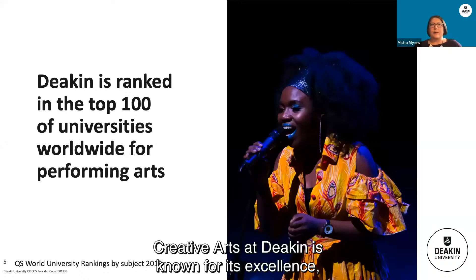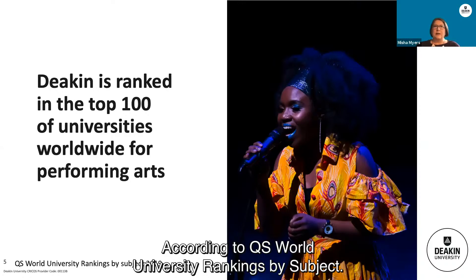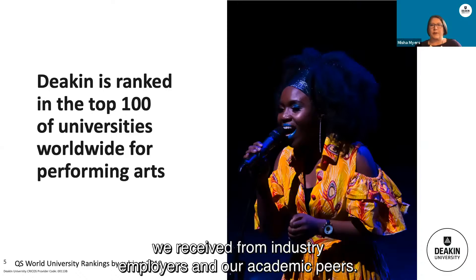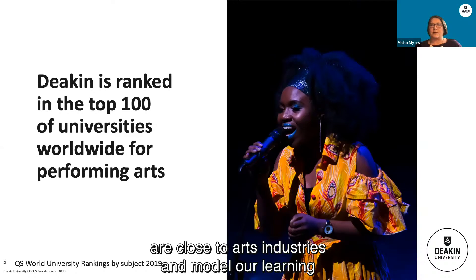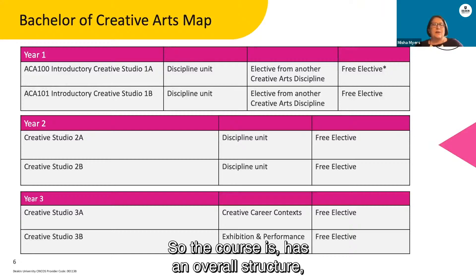Creative arts at Deakin is known for its excellence, not only in Australia, but globally. In 2019, Deakin was ranked in the top 100 universities worldwide for its performing arts, according to QS World University Rankings by Subject. This is determined by feedback we receive from industry employers and our academic peers. Our courses are close to arts industries and model our learning on the current behavior and work practices in these industries, to ensure you graduate with the best foot forward into a professional career in the arts.